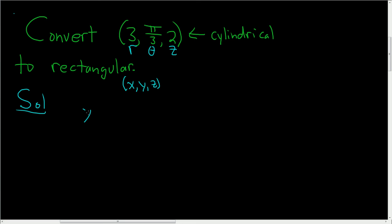So the formula for x is r cosine theta. And so in this case, r is 3, so we get 3 cosine of pi over 3, because theta is pi over 3. And the cosine of pi over 3 is 1 half, so this is 3 times 1 half, so this is simply 3 halves. One down.